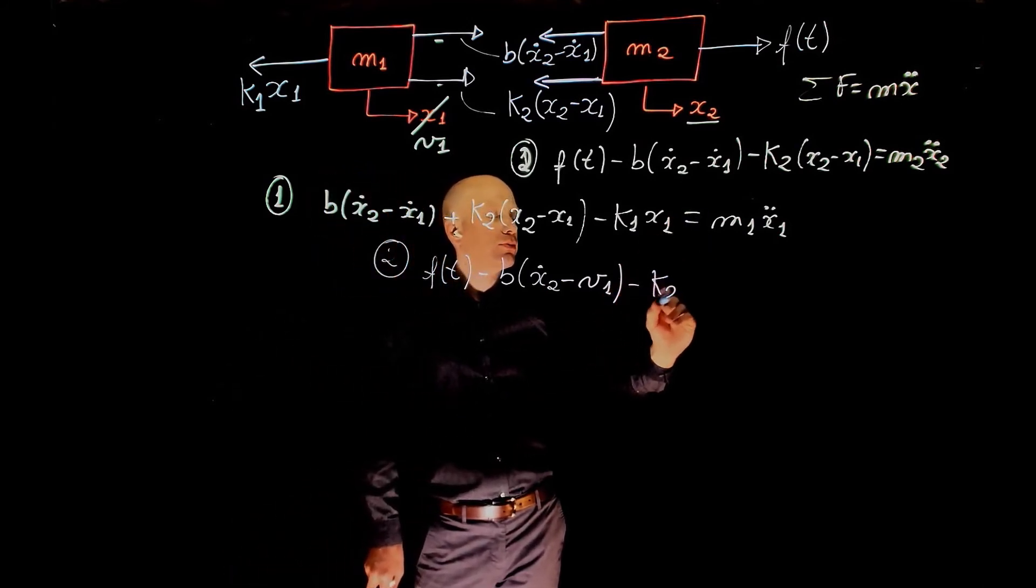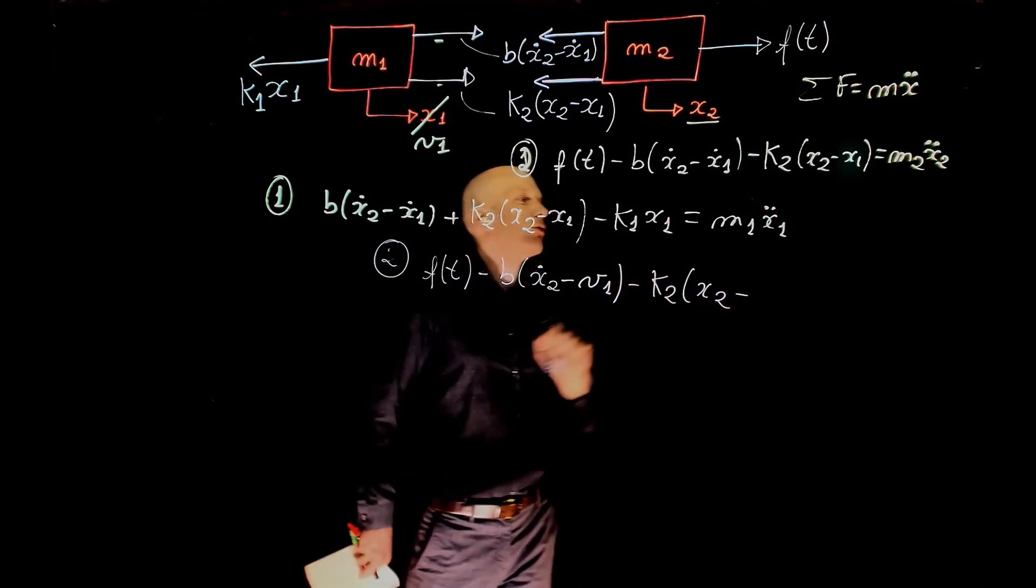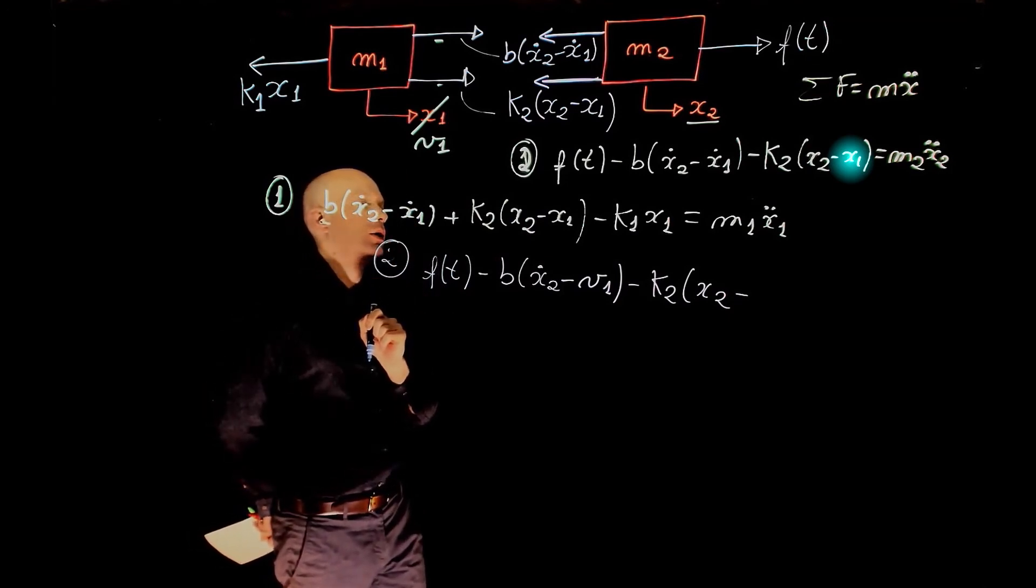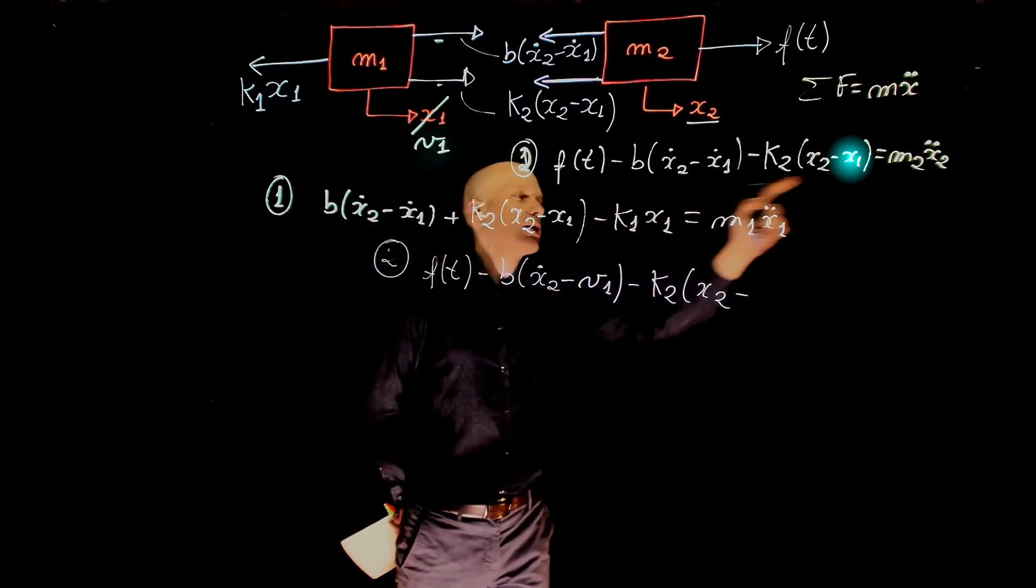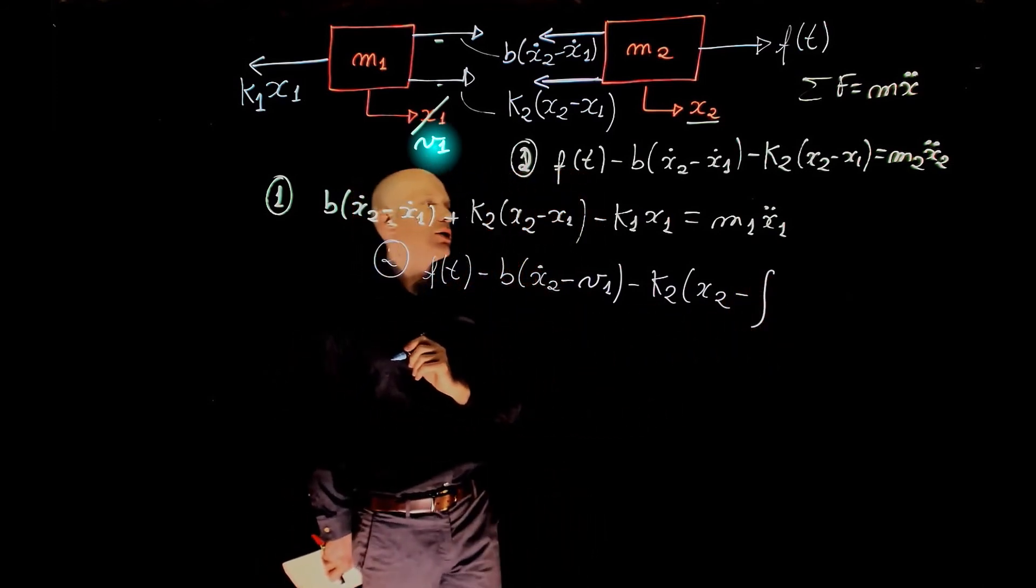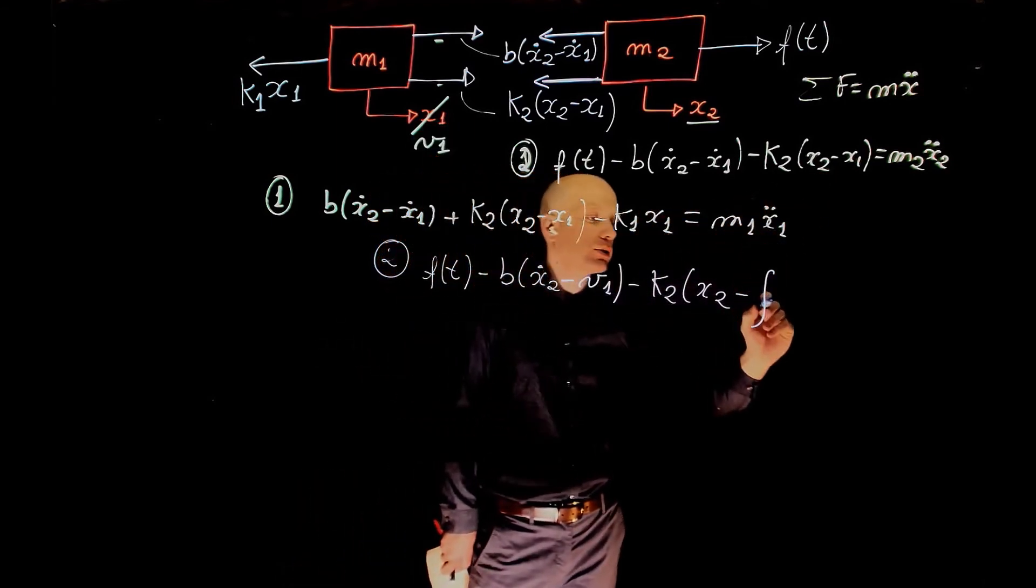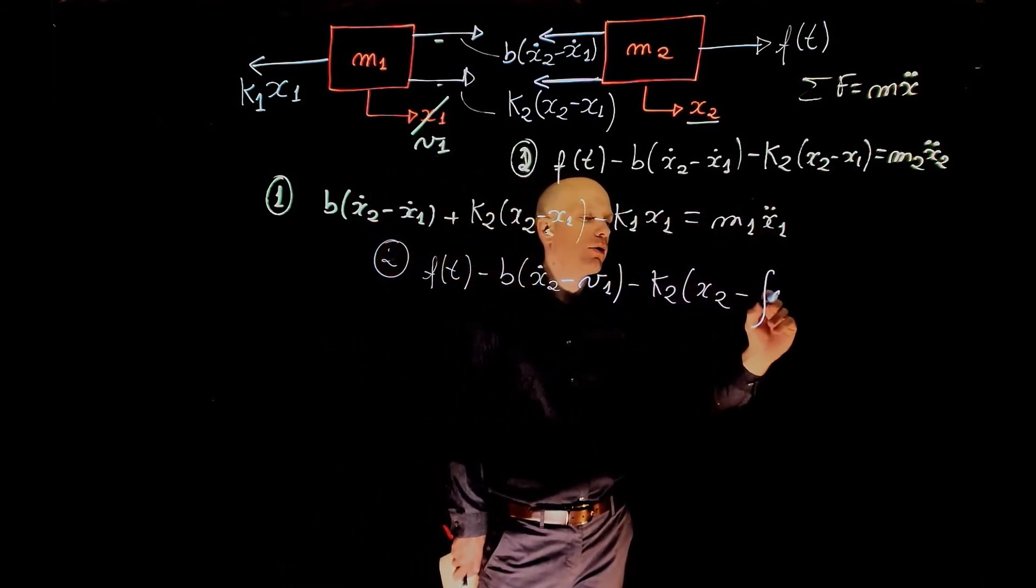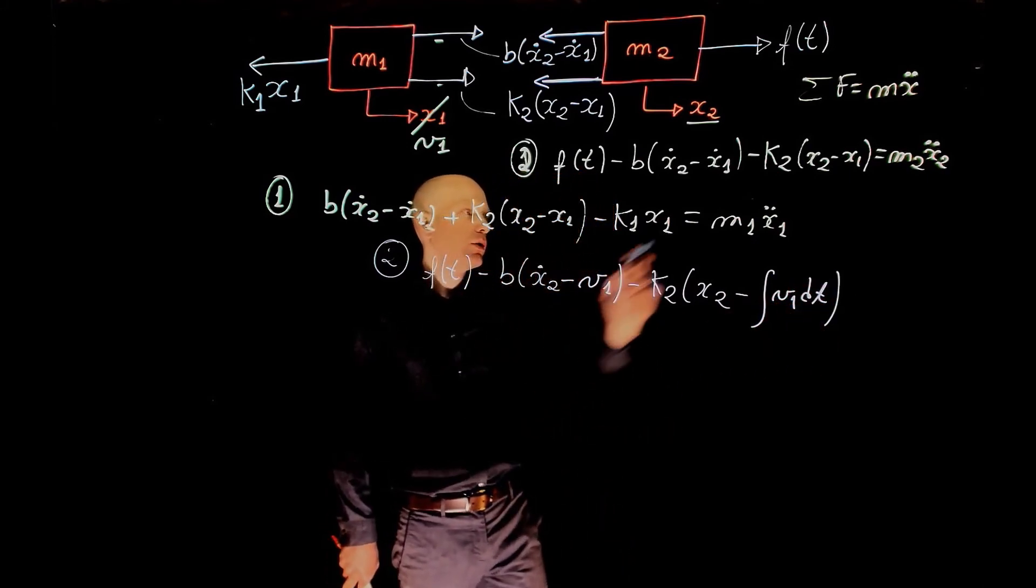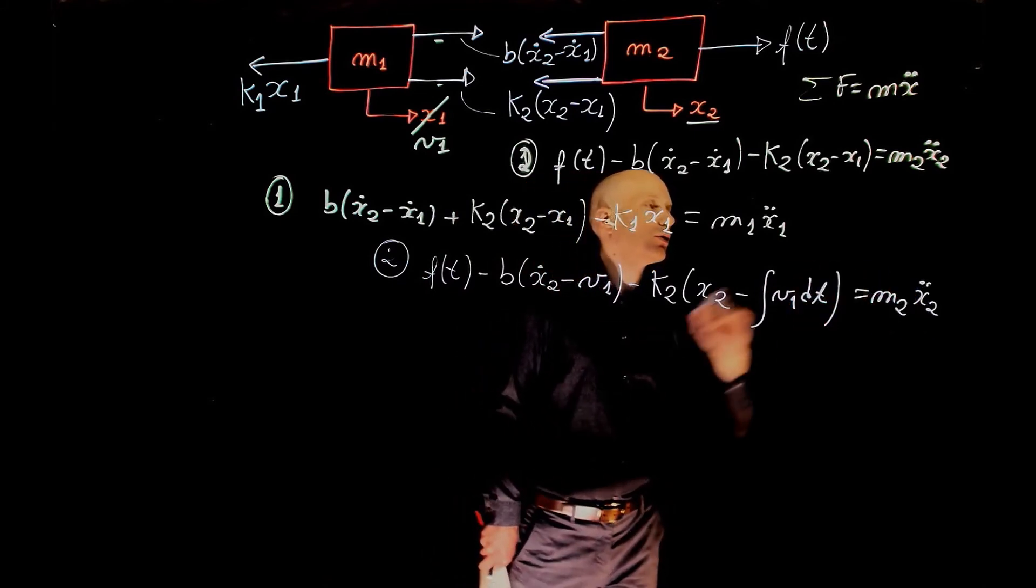Minus k2 x2, and here we have negative x1, the displacement of mass M1. If you want to express this as a function of speed, or the relation between position and speed, if speed is the derivative, if you integrate V1 we get x1, so minus the integral of V1 dt equals M2 x2 double dot.